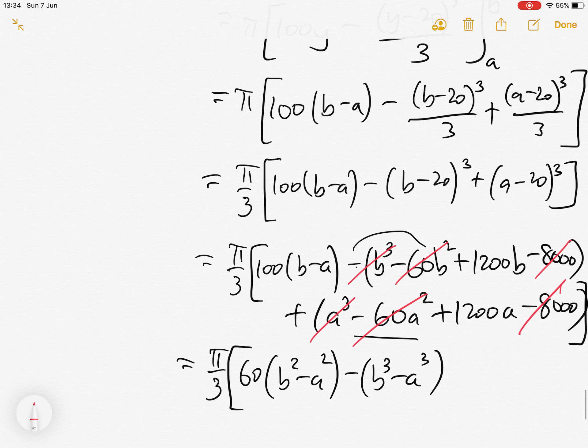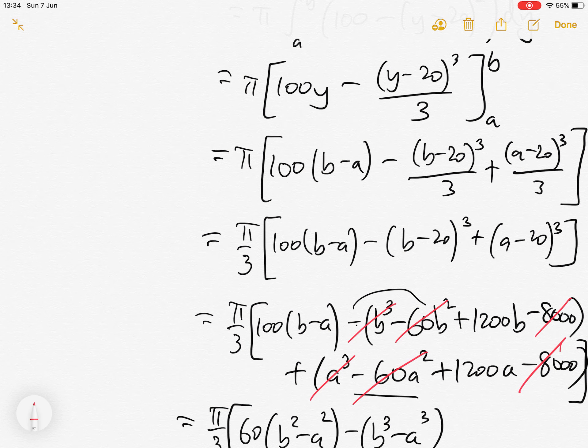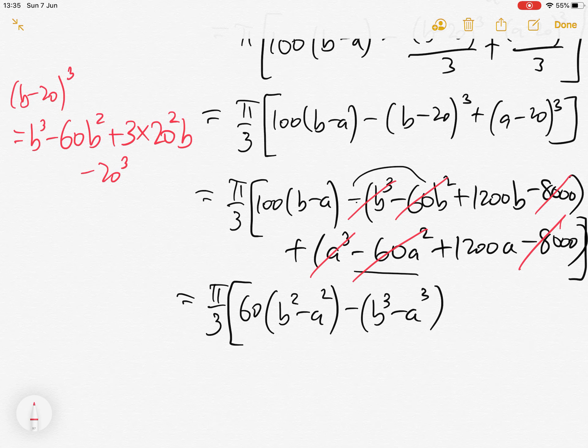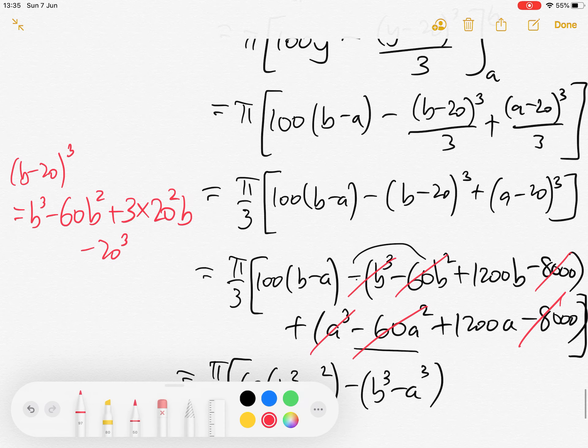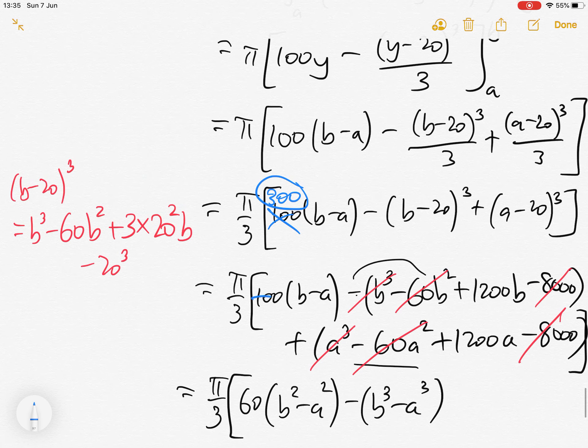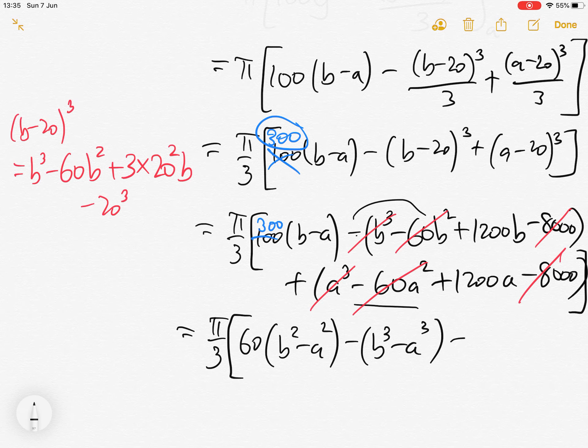What have we done wrong? Let's check we expanded b minus 20 cubed correctly. We got b cubed minus 60 b squared, then plus 3 times 20 squared b minus 20 cubed, so 3 times 20 squared is indeed 1200. Oh, I know what we did wrong. When we took the 3 outside, this shouldn't be 100, this should be 300 to make 100 when expanded out. So this is 300, and that now matches up because 1200 take away 300 is 900.